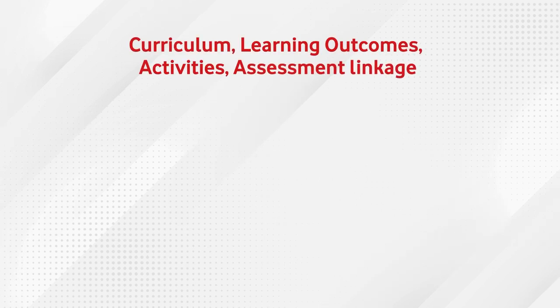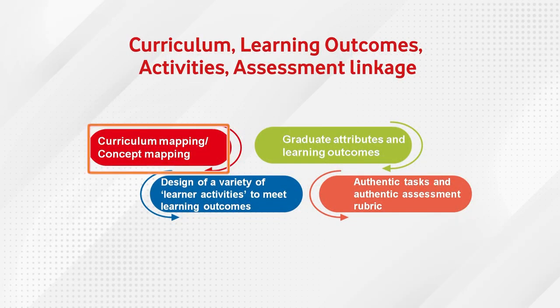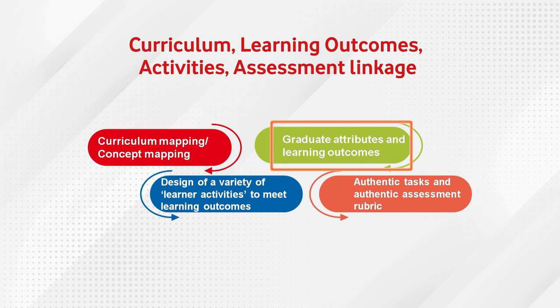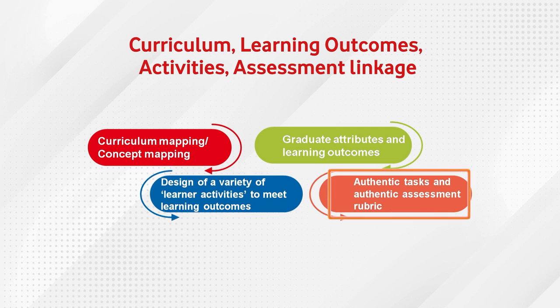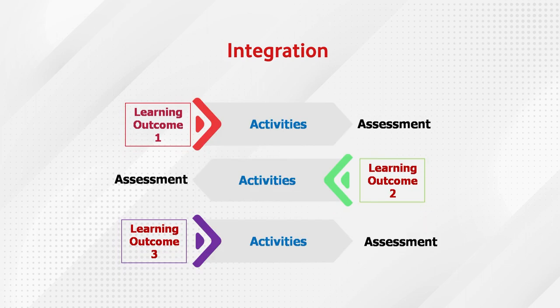We need to find out the relationship between curriculum mapping and concept mapping; graduate attributes and learning outcomes derived from that; and the learning activities we need to design and engage students with — including internship — which will achieve the learning outcomes. We have to develop authentic tasks and authentic assessment strategies or rubrics which will assess those learning outcomes. We need to integrate learning outcomes, activities, and assessment: learning outcome one, activities, assessment; learning outcome two, activities, assessment. This is possible across any discipline — language, literature, professional education, social sciences, management, education, or community development.